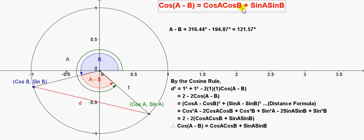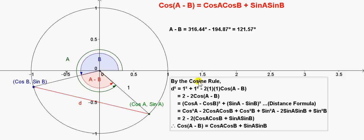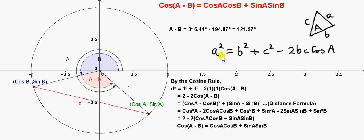To prove this result, we consider the distance between these two points. We get this distance in two ways: by using the cosine rule, and by using the distance formula from coordinate geometry. As a reminder, this is what the cosine rule looks like.